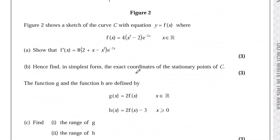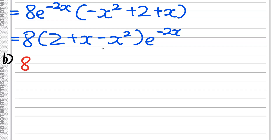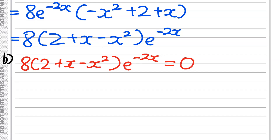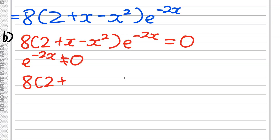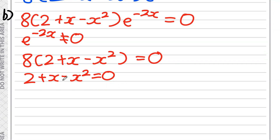For part B, we need to find the exact coordinates of the stationary points of C for four marks. Stationary points exist when f'(x) equals 0. From part A, f'(x) equals 8(2 + x − x²)e to the power of minus 2x equals 0. Now, e to the power of minus 2x cannot equal 0, so we can safely divide through by it, giving 8(2 + x − x²) equals 0. Dividing by 8: 2 + x − x² equals 0. Multiplying by minus 1 gives x squared minus x minus 2 equals 0.